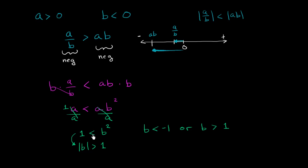If b was exactly equal to 1 and you squared it, this would be equal to 1. If it was 0.5, then b squared would be 0.25, which wouldn't be greater than 1. So you know both of these things are true, and this is another way of saying that the absolute value of b is greater than 1.